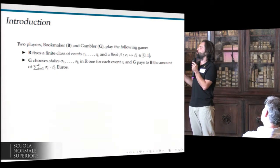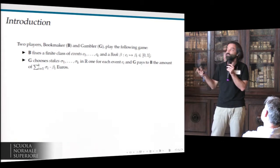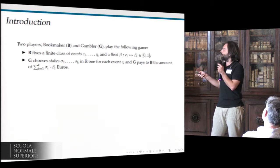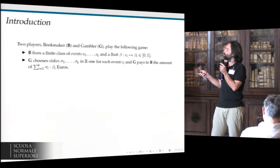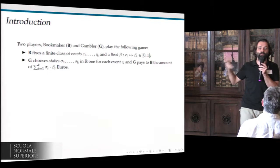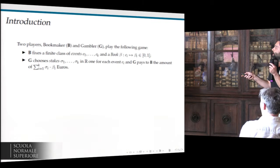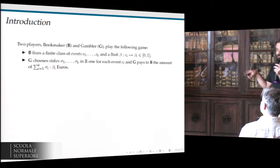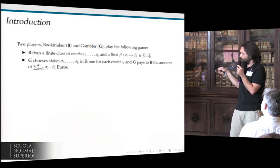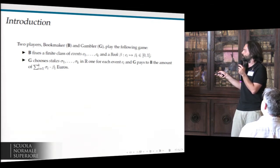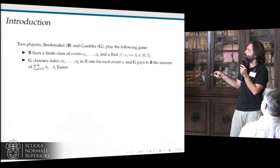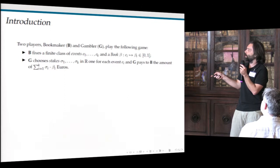They're playing the following game. The bookmaker chooses a finite set of events of interest, and for each event he publishes a book — for every event he gives a real number in zero to one, so it is bounded. After the bookmaker has published the book, the gambler can choose stakes sigma one through sigma k, one for each event, which range over the reals — notice that stakes can be either positive or negative. For each event, the gambler pays to the bookmaker the amount sigma i times beta i, which is the value the bookmaker gave to event E_i.